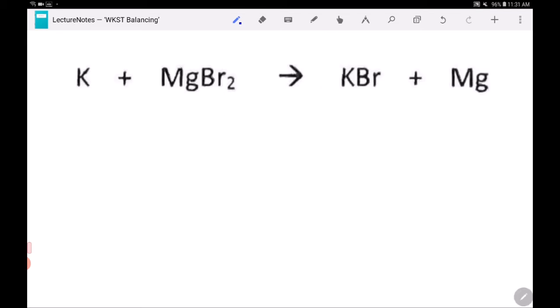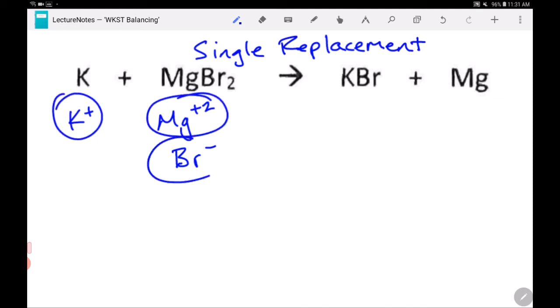The third type of reaction I want you to be familiar with is a single replacement reaction. A single replacement reaction has three things. There's the potassium, the magnesium, and the bromide. One, two, three.